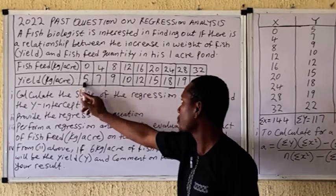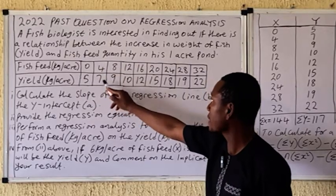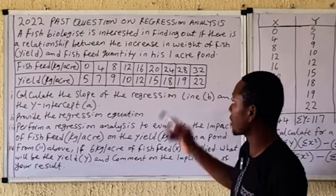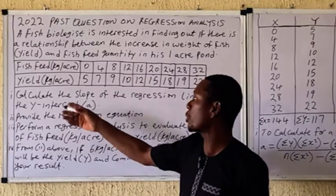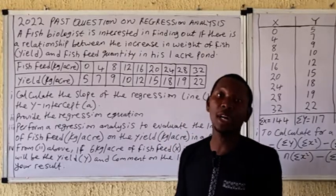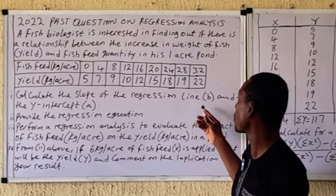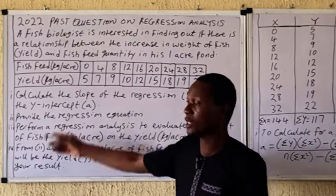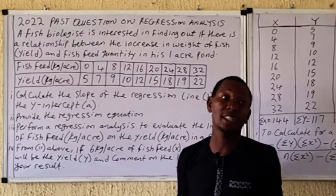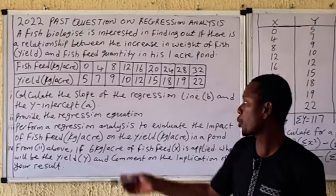When zero fish feed was applied in one acre the yield was five, when four was applied the yield was seven, when it was applied the yield was nine, and the data continues. You have been asked to calculate the slope of the regression line. To find the relationship you must calculate the slope and the intercept, then find the regression equation, and use it to predict.